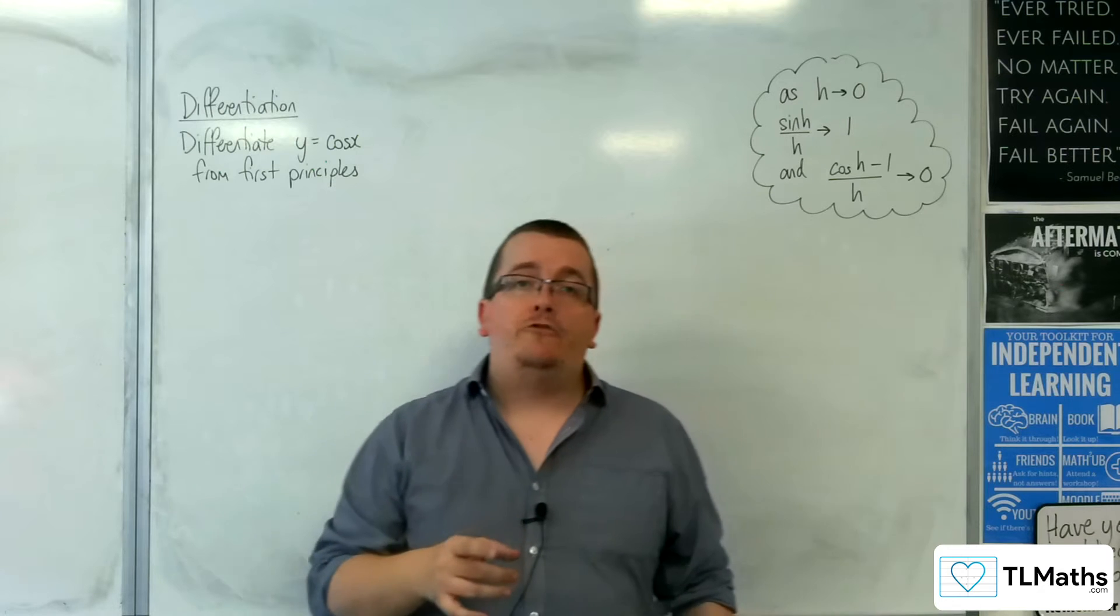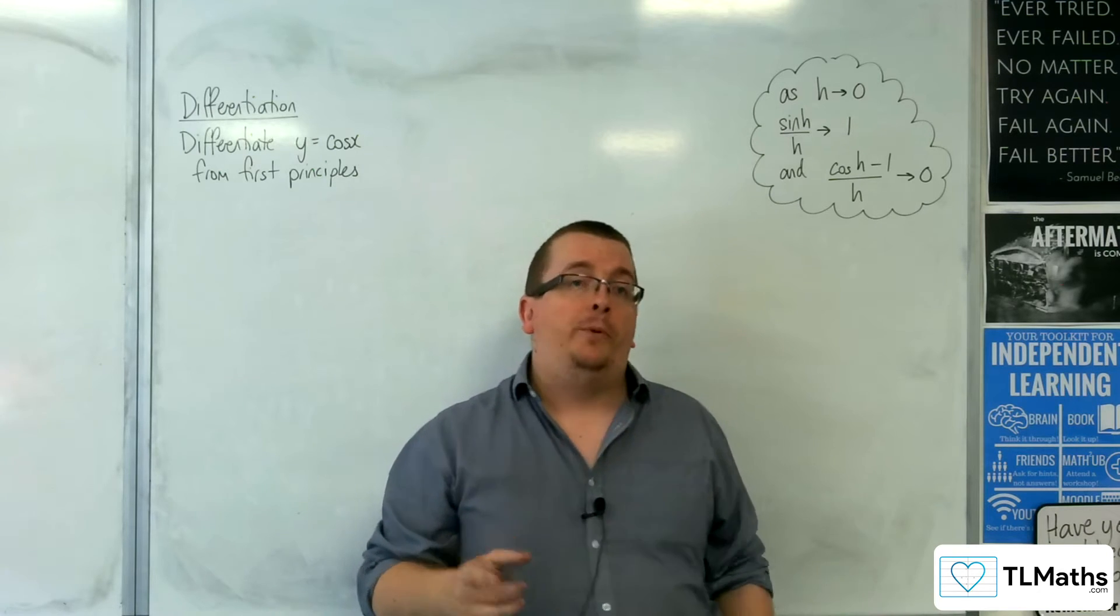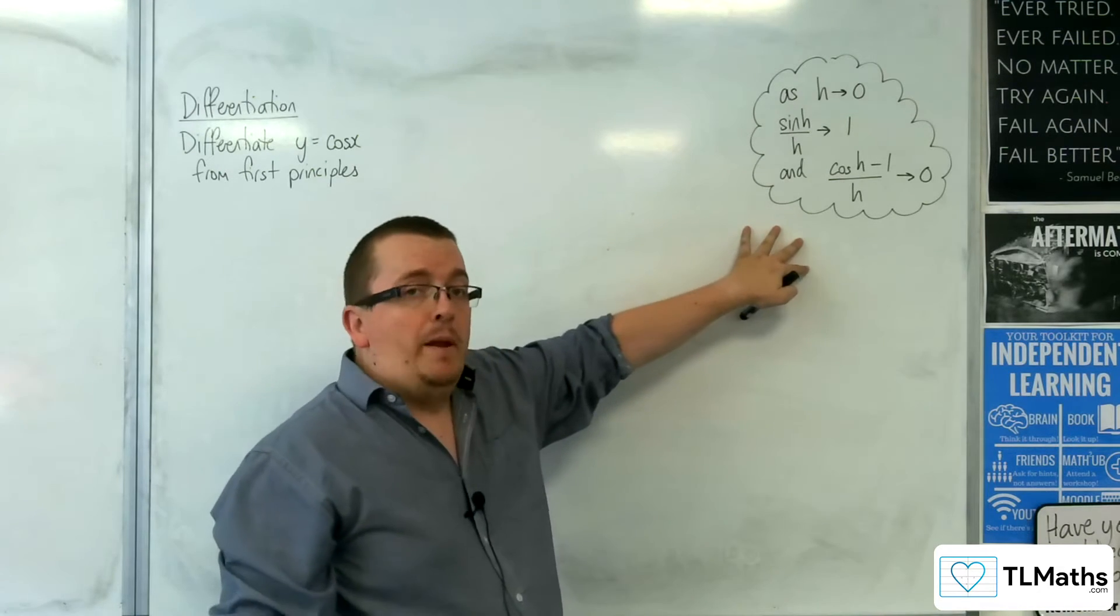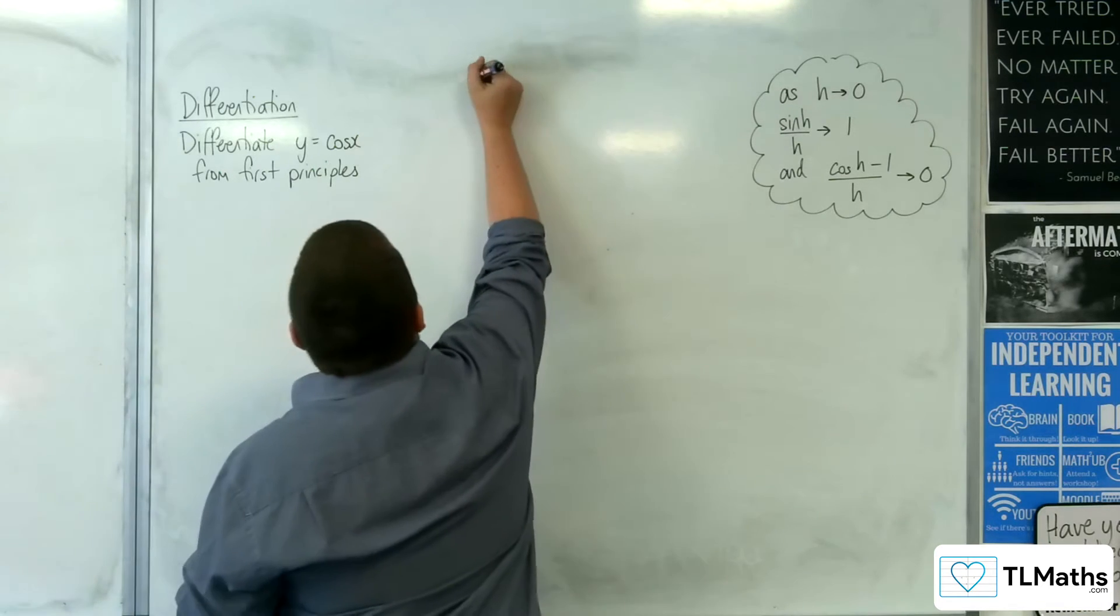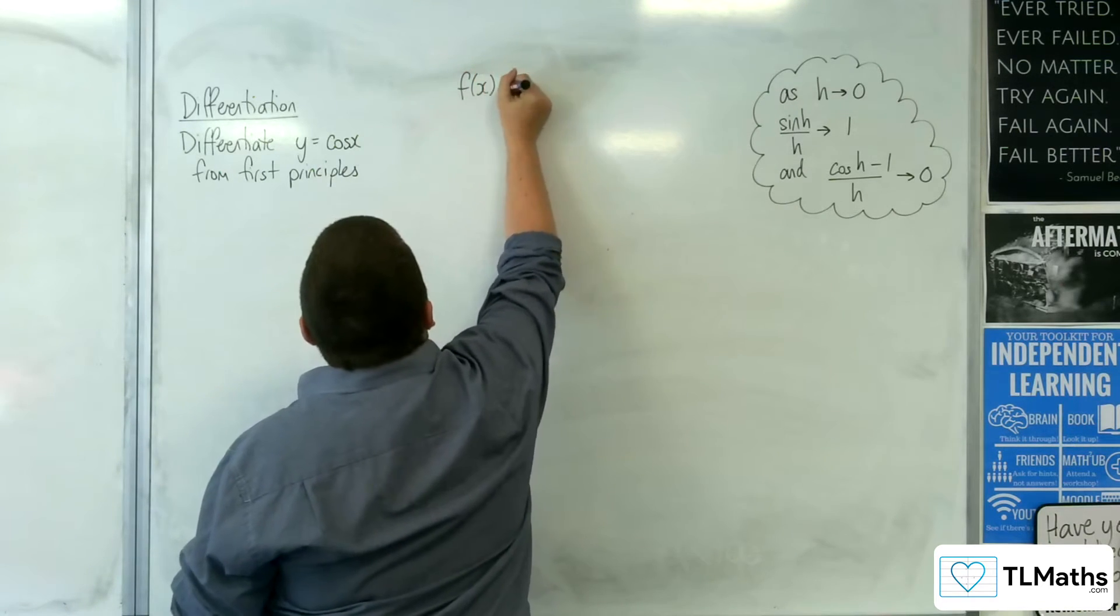So in the previous video I showed you how to differentiate sine x from first principles using these limits. We're going to do the same thing with cosine x now.